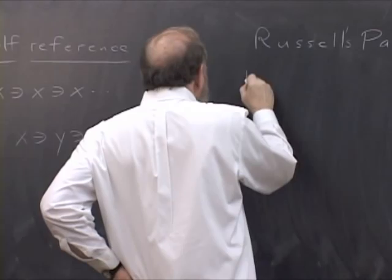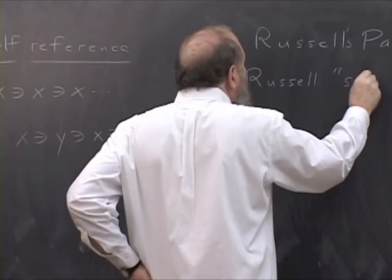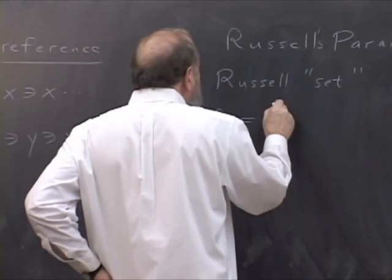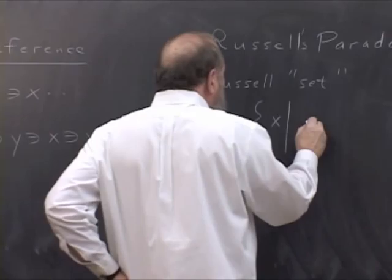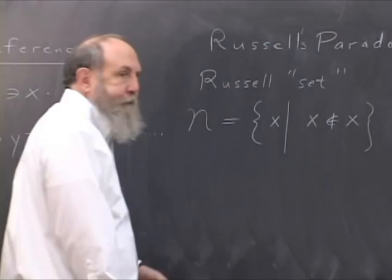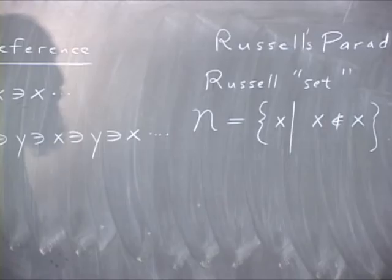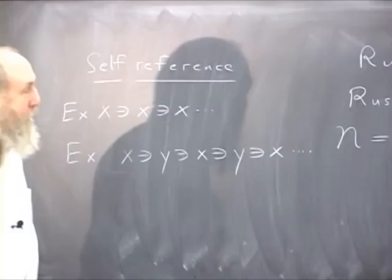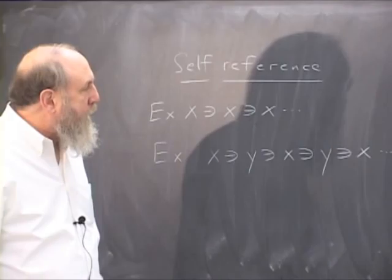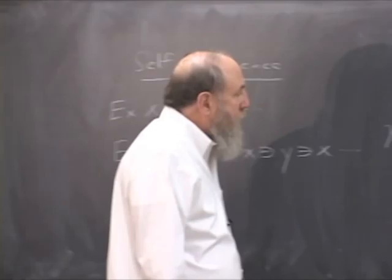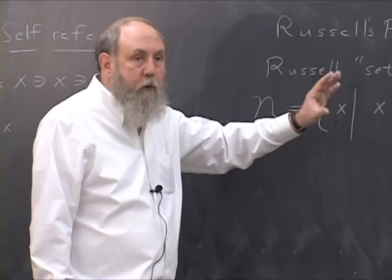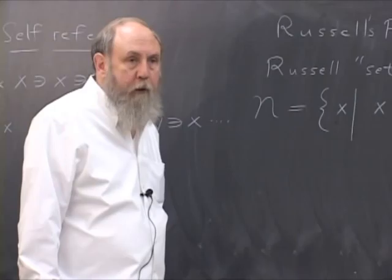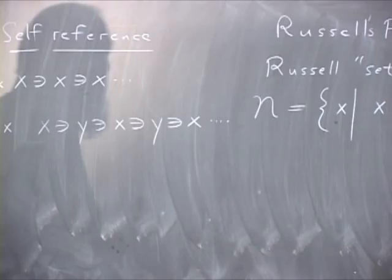The paradox deals with what I would call the Russell set, which I'll call n. This is the collection of all sets x such that x is not an element of x. If it's possible for a set to be an element of itself, it's also possible for it to not be an element of itself. By the law of the excluded middle, we divide all sets into two types. Russell's terminology was that if a set is not an element of itself, it's normal; if it is an element of itself, it's abnormal.